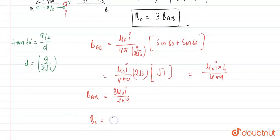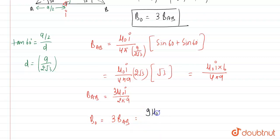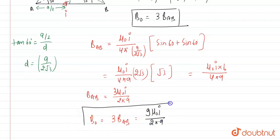The total magnetic field at the center is equal to 3 times B_AB = 3 × 3μ₀I / (2πa) = 9μ₀I / (2πa). That is the final answer.